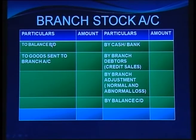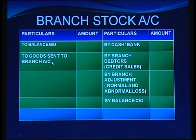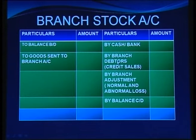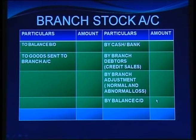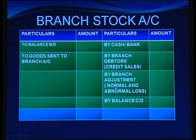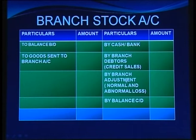The branch stock account starts with the opening balance. Goods sent to branch is recorded on the debit side. On the credit side: cash sales by bank, credit sales by branch debtors, and branch adjustment as the balancing figure. The closing balance is either known or given as additional information. Any remaining balancing figure may represent normal or abnormal loss, or a surplus — the helping account being branch adjustment.